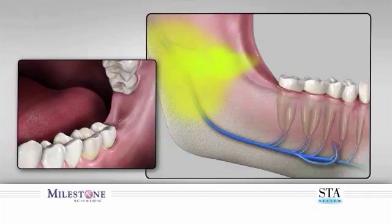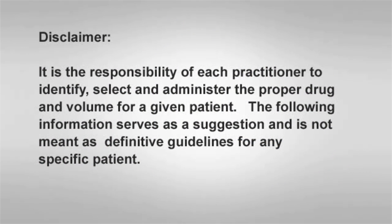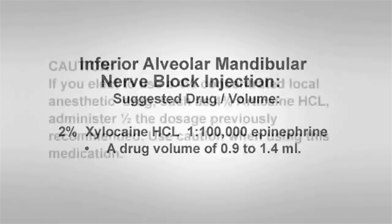Should you require more than one anesthetic cartridge, you can reload subsequent cartridges and continue as required. It is the sole responsibility of each practitioner to identify, select, and administer the proper drug and volume for a given patient. The suggested drug and volume to perform the inferior alveolar nerve block injection is 2% xylocaine HCL with 1:1,000 epinephrine, with a drug volume of 0.9 to 1.4 milliliters, equivalent to three-quarters to one full cartridge. If you elect to use a 4% concentrated local anesthetic such as 4% articaine HCL, use one half the dosage previously suggested and use extreme caution.